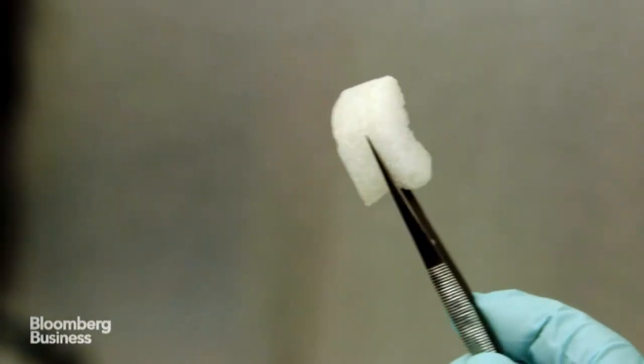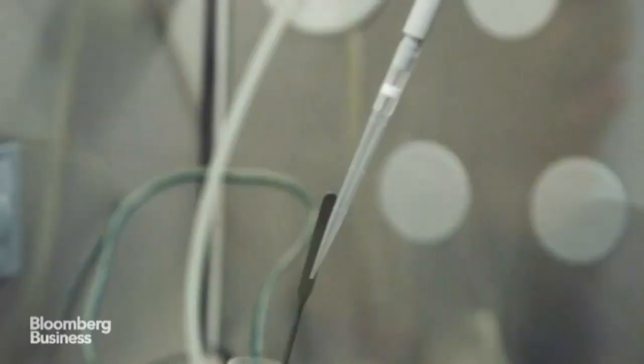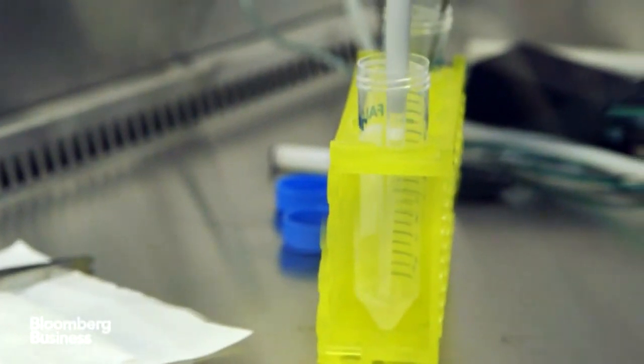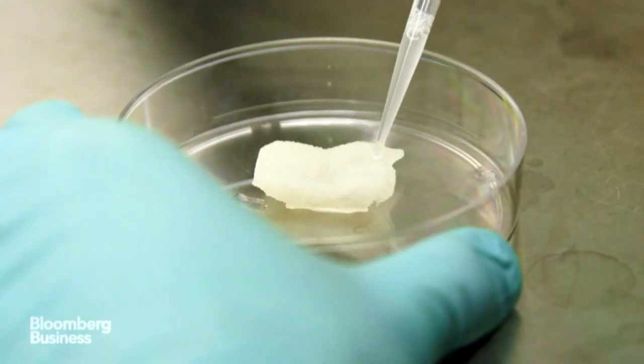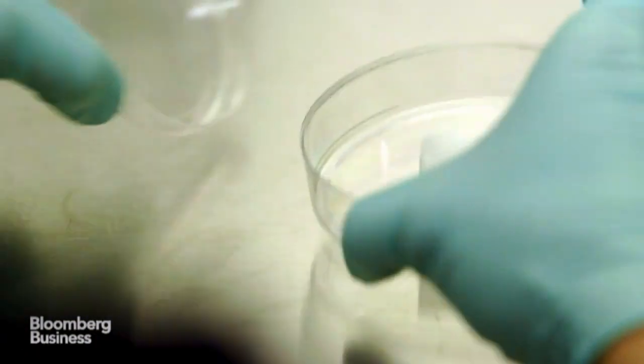In our case, we're using a bone tissue from a cow that's stripped of all of its cellular material. But the microstructure contains information that speaks to those stem cells and encourages them to move down the bone differentiation pathway.